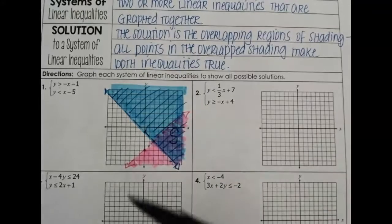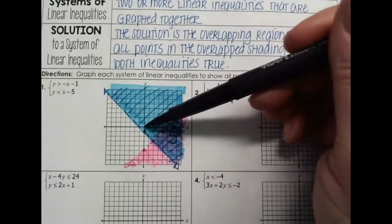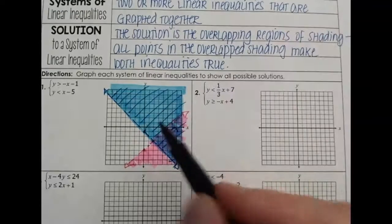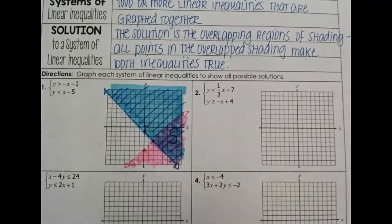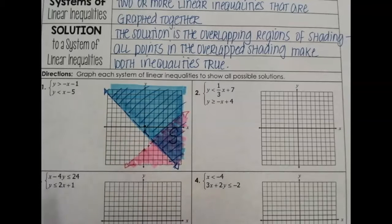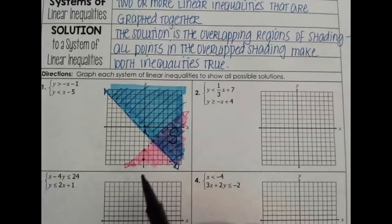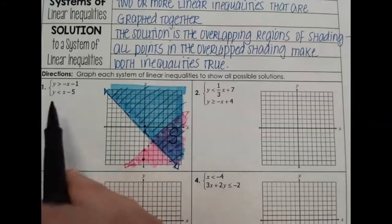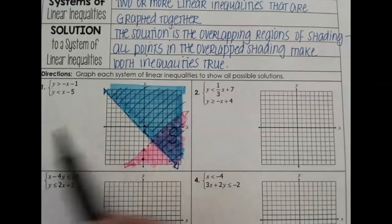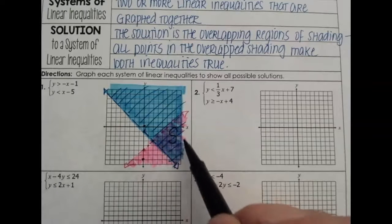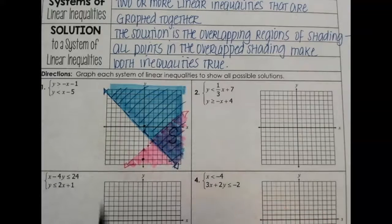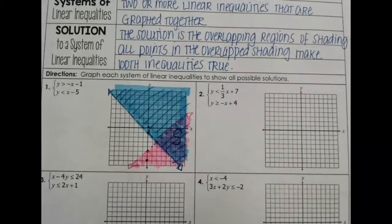If I asked: is the point (0, 0) a solution? The point (0, 0) is only in the blue shading — it will only work for the top inequality. If I asked about the point (0, -7), it is only in the pink, so it only works for the bottom inequality. I have to ask about a point in the purple overlap region for it to work for both inequalities.